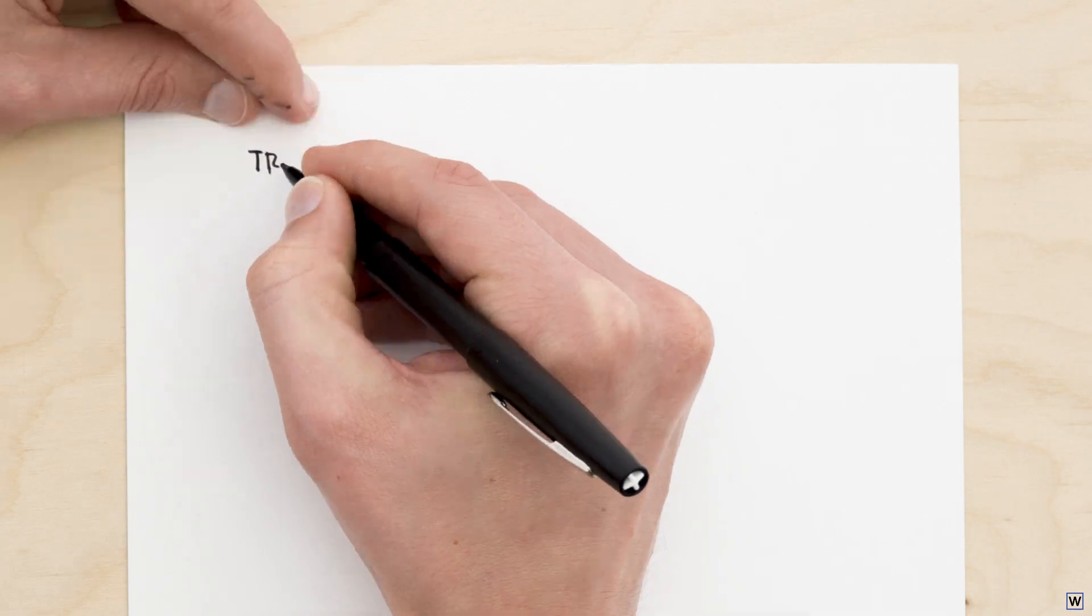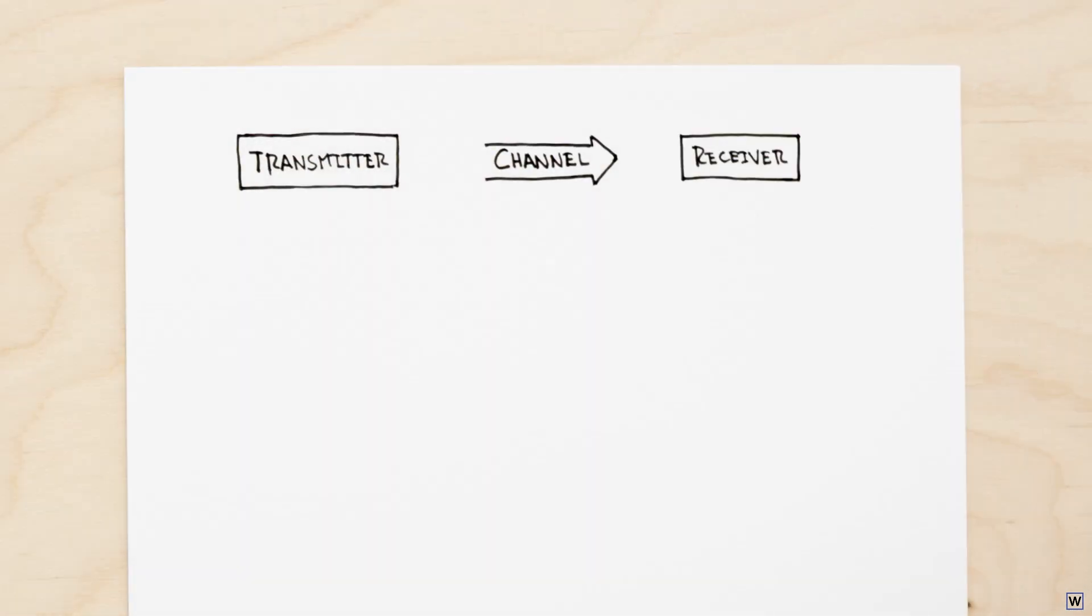The communications systems information theory was designed for are often modeled in three parts: a transmitter, a channel, and a receiver. The transmitter sends messages over the channel, to be interpreted by the receiver. A critical piece of information theory is the connection between the probability of receiving a given message and the information contained in that message.